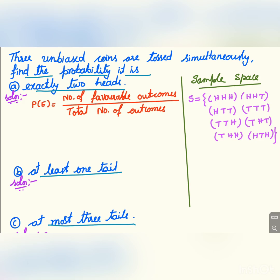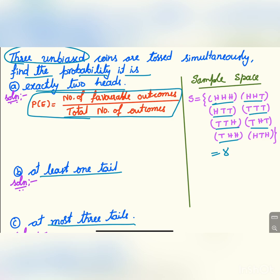Probability formula is P(E) equals number of favorable outcomes divided by total number of outcomes. Now in this case, for three unbiased coins tossing together, the total number of outcomes are eight: HHH, HHT, HTT, TTT, TTH, THT, THH, HTH. So these are the possible outcomes.